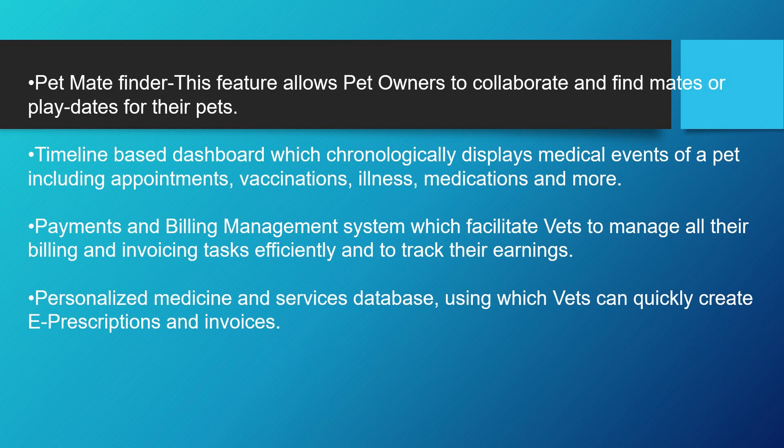The Pet Mate Finder feature allows pet owners to collaborate and find mates or playdates for their pets. It's a timeline-based dashboard that chronologically displays medical events of a pet, including appointments, vaccinations, illness, medications, and more. There is also a billing, payments, and billing management system in our application which facilitates vets to manage all their billings, invoicing, and taxes efficiently, and to track their earnings.